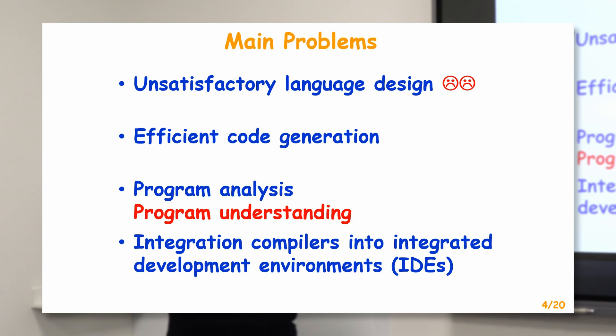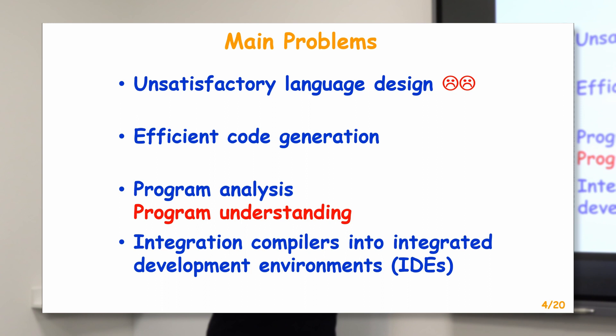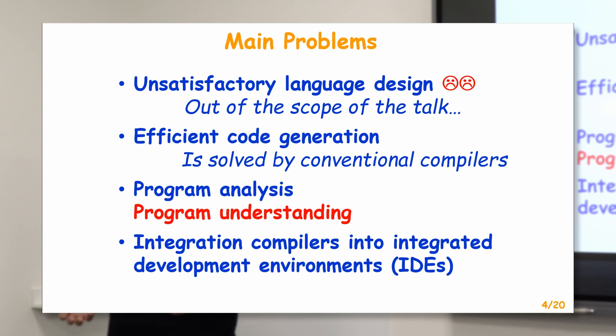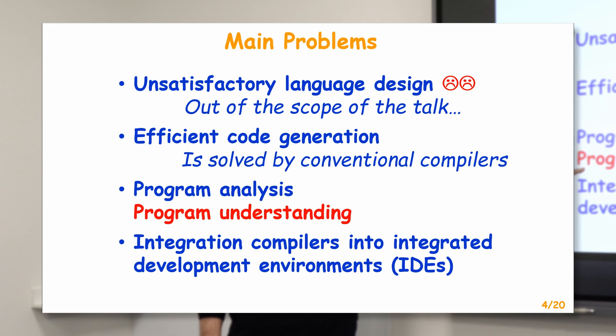I could give you a lot of examples of absolutely ugly design of almost all current languages, but unfortunately this is not the time to discuss that. The next problem is efficient code generation. I think that this problem in general is solved by conventional compilers — people know how to generate highly efficient code. However, these two remaining problems are still very dramatically actual.